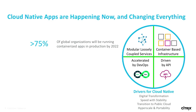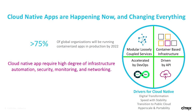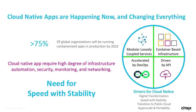Cloud Native requires a high degree of infrastructure automation, security, monitoring, and networking. It requires a lot of work — it's not exactly straightforward to pull together, and this contradicts the need for speed. Companies are trying to balance speed and stability by working with vendors and putting production-grade systems in place.